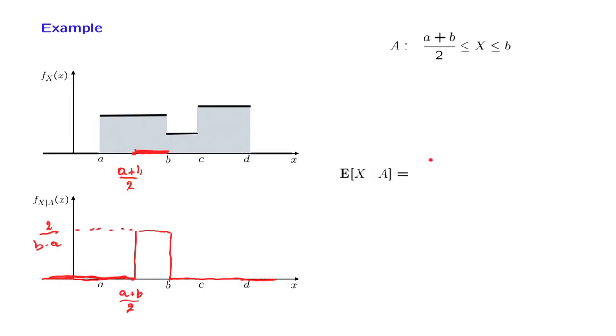The conditional expectation in this example is just the ordinary expectation, but applied to the conditional model. Since the conditional PDF is uniform, the conditional expectation will be the midpoint of the range of this conditional PDF.